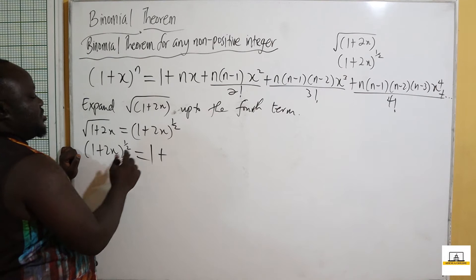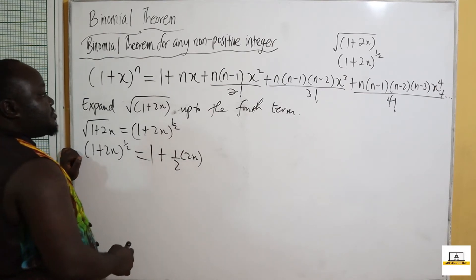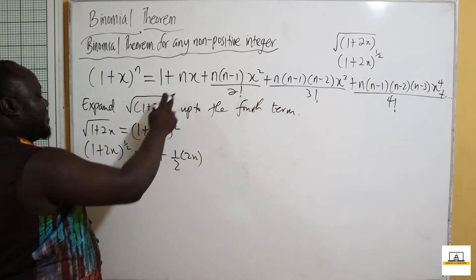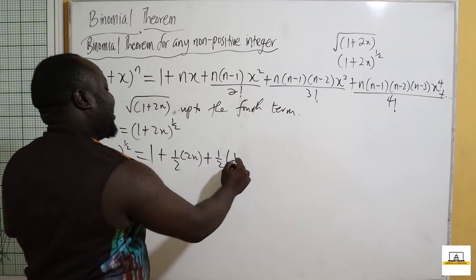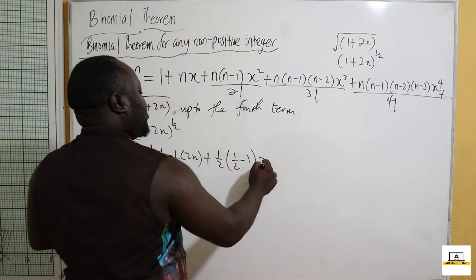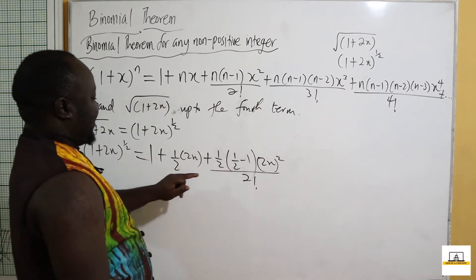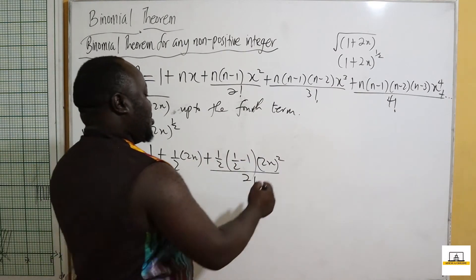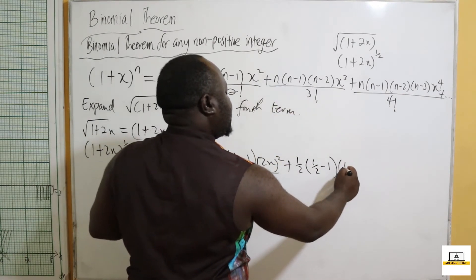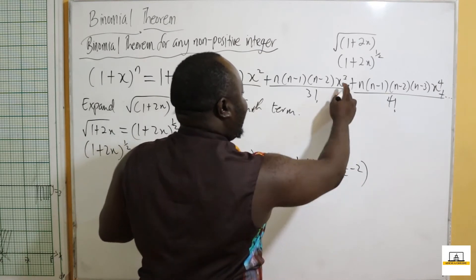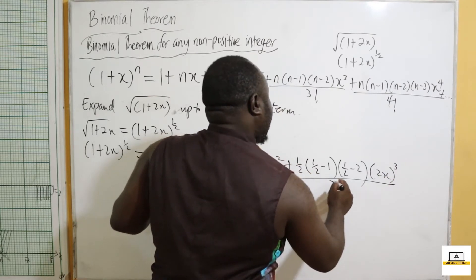Then we have plus nx, where n = ½ and our x is 2x, giving ½ × 2x. The next term is ½(½−1)(2x)² over two factorial, and the fourth term is ½(½−1)(½−2)(2x)³ over three factorial.